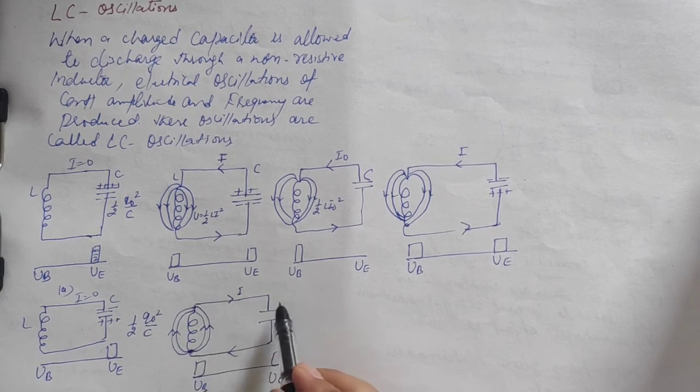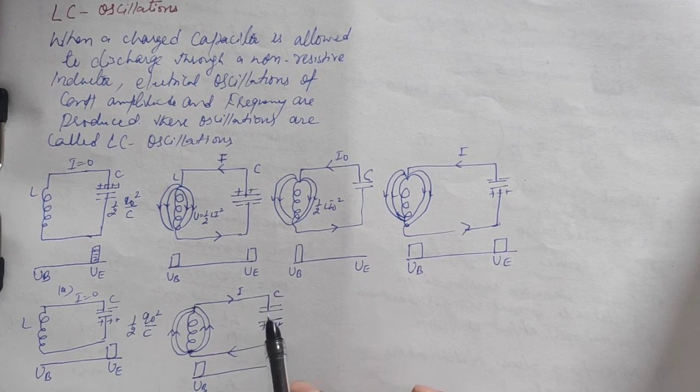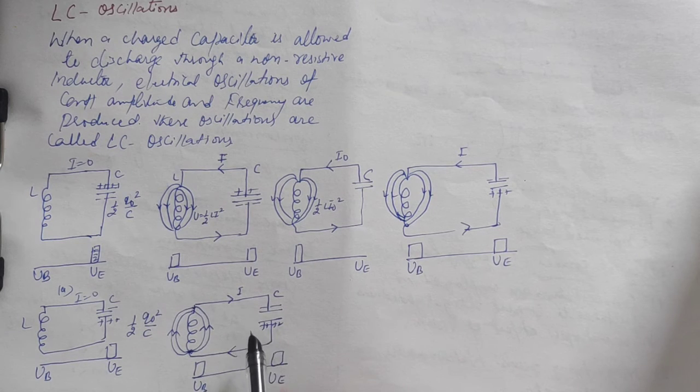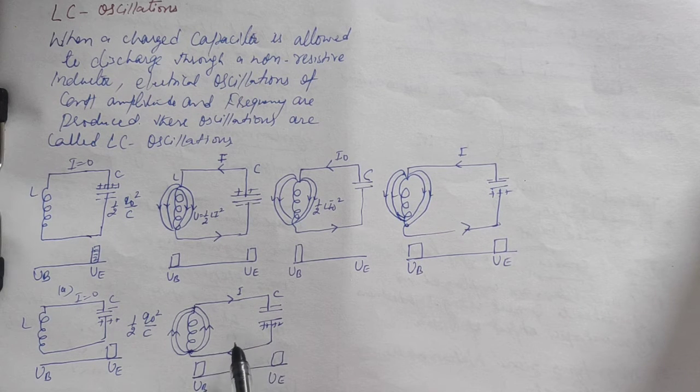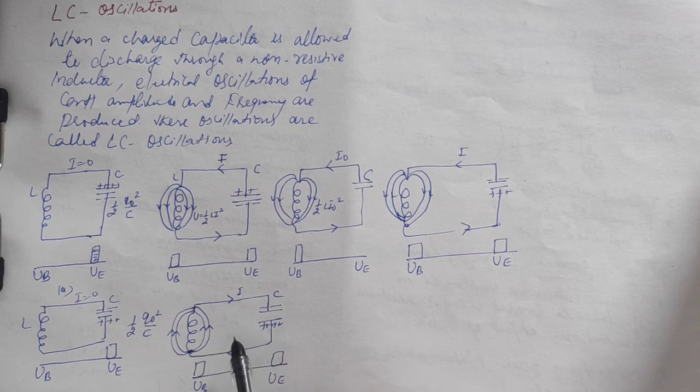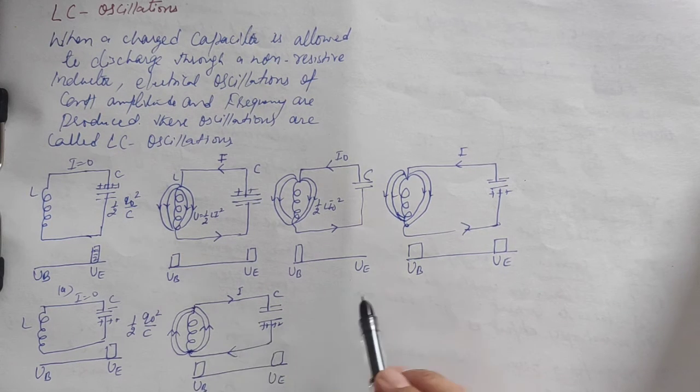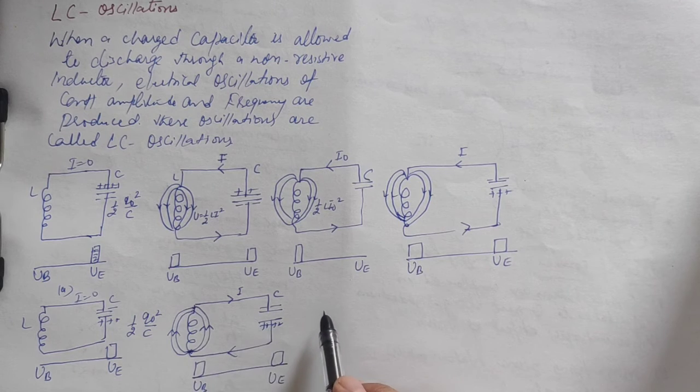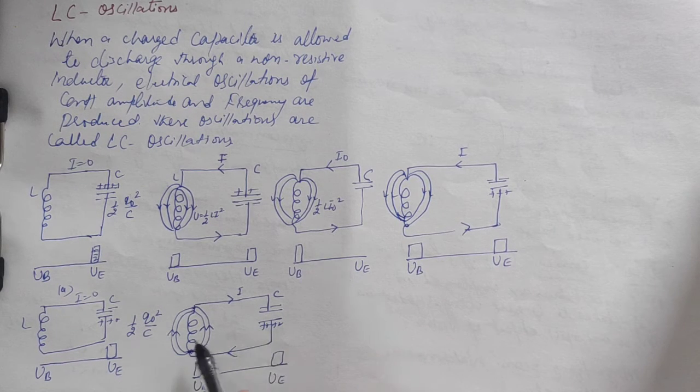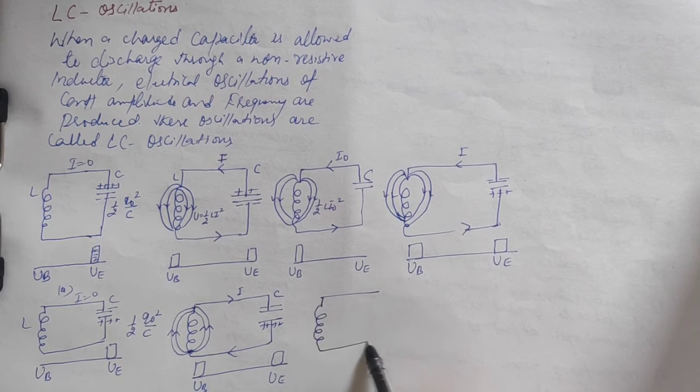Current flows in this direction: this side is positive, this is negative capacitor. The capacitor begins to discharge. Current flows in the opposite direction, energy transfers to the inductor, magnetic field develops, and the process repeats in the opposite direction. This is the initial state, the first step, and then the second step.